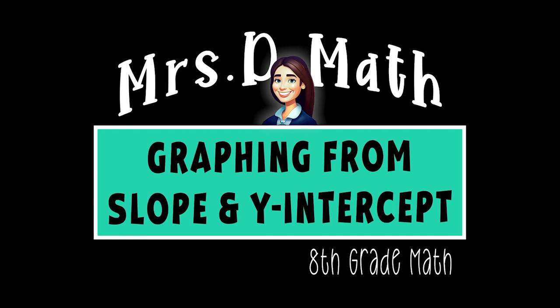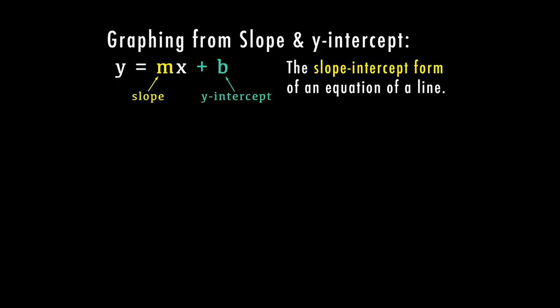So in the last video we went over the slope formula, and we have it here - the slope-intercept form of an equation of a line is y equals mx plus b. M represents our slope and b represents our y-intercept.